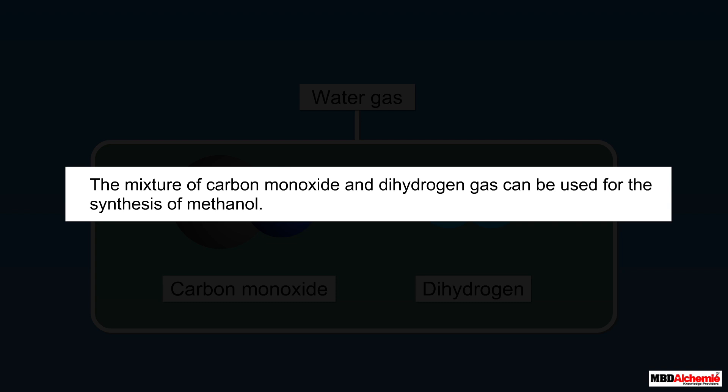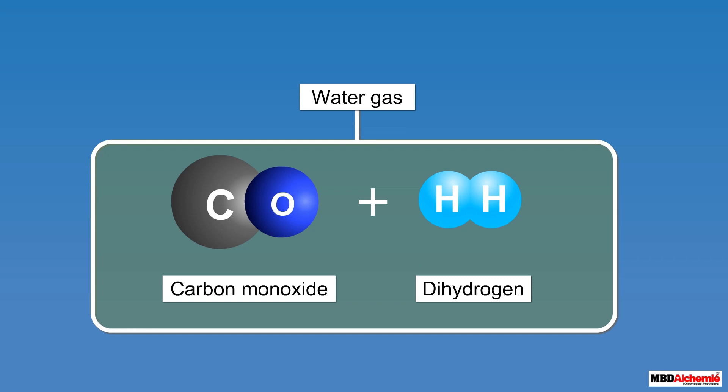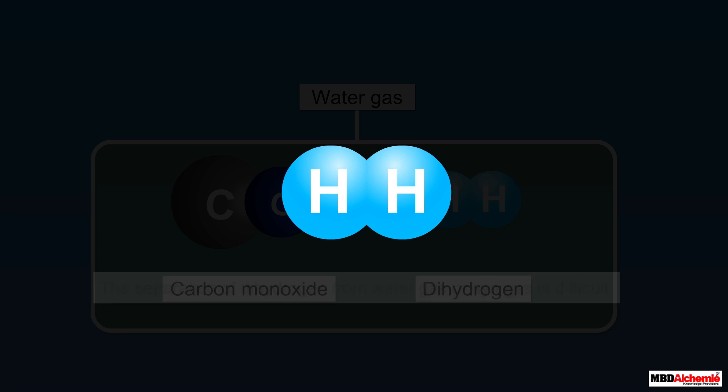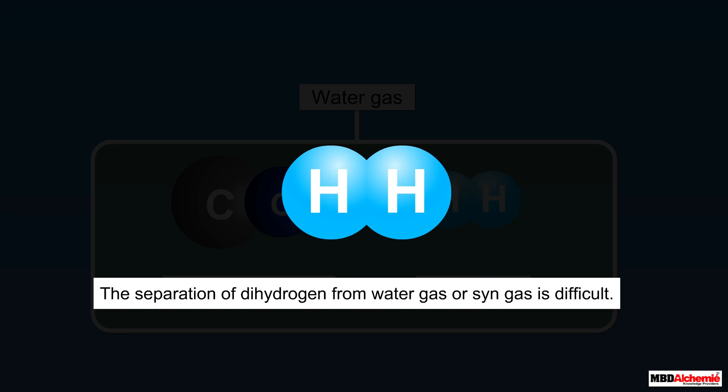This mixture of carbon monoxide and dihydrogen gas can also be used for the synthesis of methanol. Therefore it is also called the synthesis gas or syngas. However, the separation of dihydrogen from water gas or syngas is difficult.